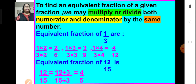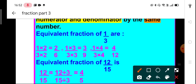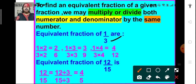Now, how do we find the equivalent fraction of a given fraction? To find an equivalent fraction, we multiply or divide the numerator and the denominator by the same number. The first method is by multiplying both the numerator and the denominator by the same number. For example, if we have a fraction 1 upon 3, to get its equivalent fraction we multiply the numerator 1 by 2 and also the denominator 3 by 2 and we get 2 upon 6. So, 2 upon 6 is an equivalent fraction of 1 upon 3. Similarly, we can get more equivalent fractions of 1 upon 3 by multiplying both the numerator and the denominator by the same number.